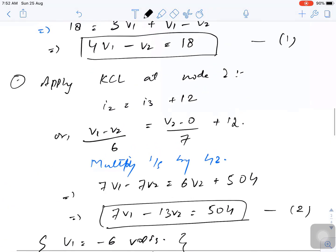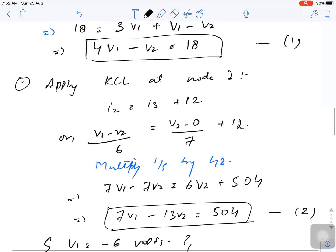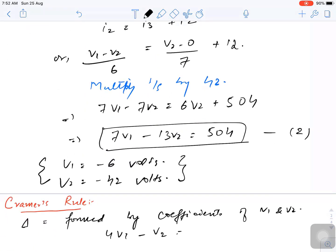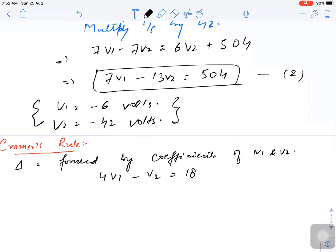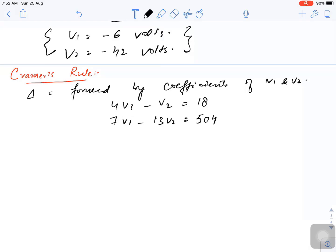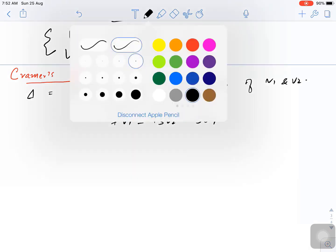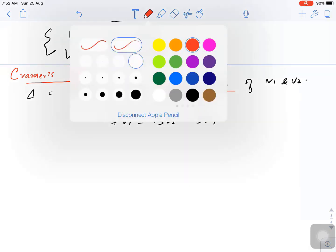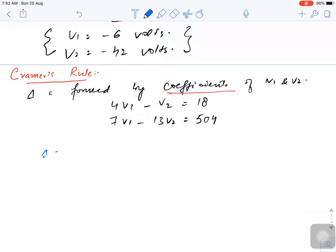So if we write down my equations, the first equation was 4V1 minus V2 equal to 18 and the second equation is 7V1 minus 13V2 equal to 504. As I said, delta would be created by the coefficients of V1 and V2. So my delta matrix has elements 4, minus 1, 7, and minus 13.